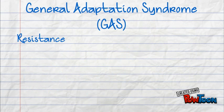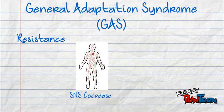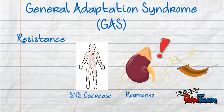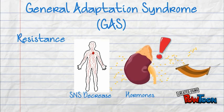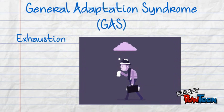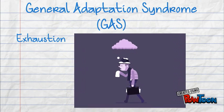In the resistance stage, sympathetic nervous system activity decreases and the adrenal glands continue to release hormones such as cortisol. Basically, your body attempts to adapt to the current stress by decreasing activity and conserving energy. In the exhaustion stage, the nervous and immune systems no longer have the energy to sustain themselves, and fatigue and other symptoms become very apparent.